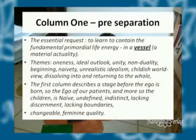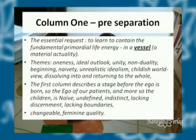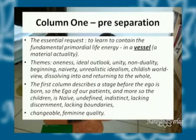The essential request of the first column is to contain this fundamentally primordial life energy, and to create a vessel. The whole question is: what is the quality of my vessel? Did they manage to create a physical, emotional, or mental vessel? Even the brain is the vessel for thoughts. This is why early dementia is also something you see in the first column — like in Ranunculus bulbus.